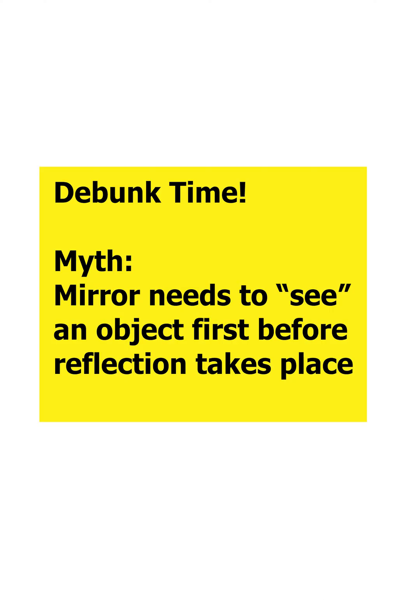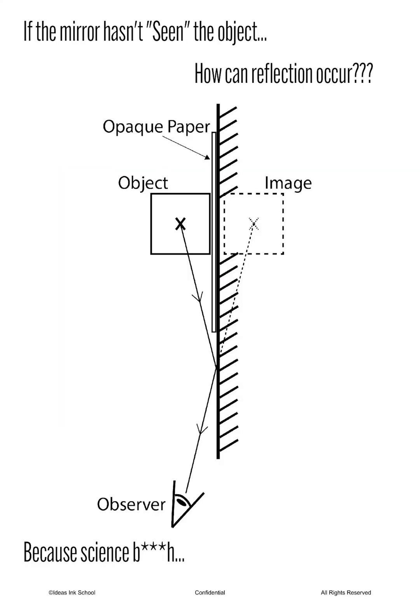Now, let's address the viral video of people claiming that mirrors need to see an object first before any reflection can take place. Let's debunk this silly notion by taking a look at the diagram shown. There is a piece of opaque paper between the object and the mirror, preventing the mirror from seeing the object.